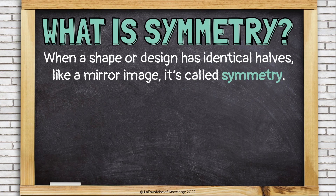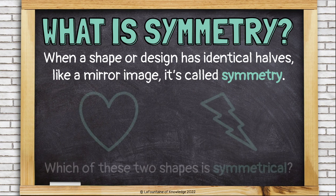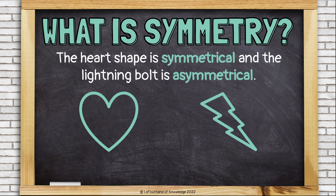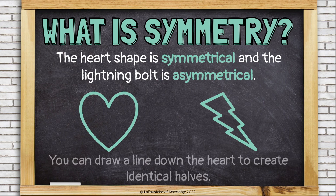What is symmetry? When a shape or design has identical halves, like a mirror image, it's called symmetry. Which of these two shapes is symmetrical? The heart shape is symmetrical, and the lightning bolt is asymmetrical.